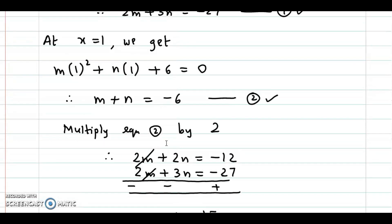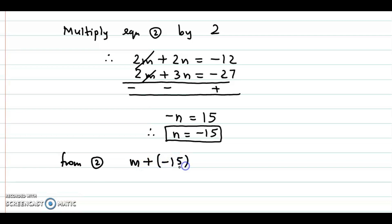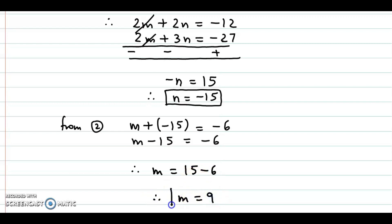From equation 2, we substitute n equal to minus 15: m plus minus 15 equal to minus 6, so m minus 15 equal to minus 6. Upon simplification, m equal to 15 minus 6, which gives 9. Finally, m equal to 9 and n equal to minus 15.